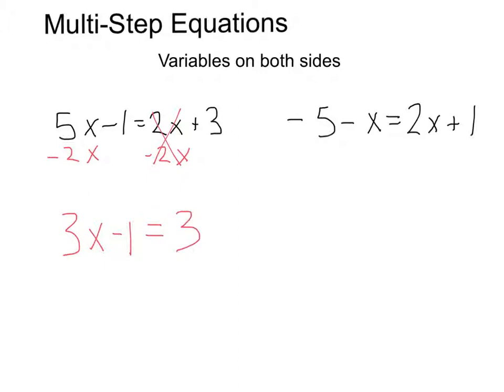From here, notice I have my variable on one side now. Now I want to continue working until I get my variable by itself. So first I have this minus 1 attached to it. So let's go ahead and do the opposite of that, plus 1, plus 1. That's going to leave us with 3x equals 4.